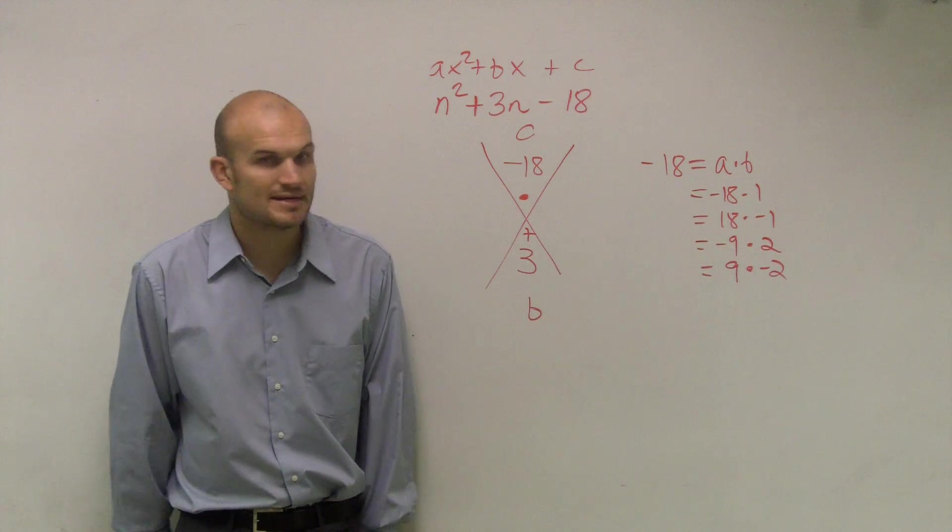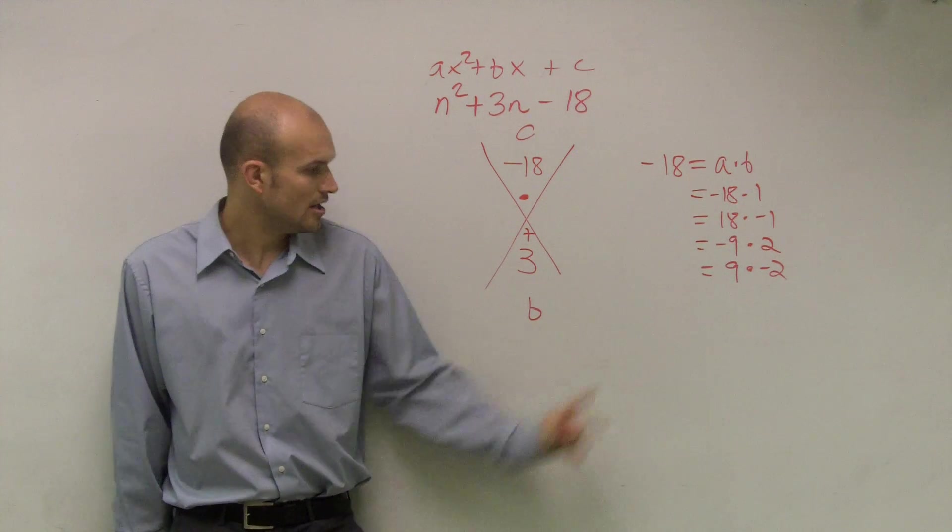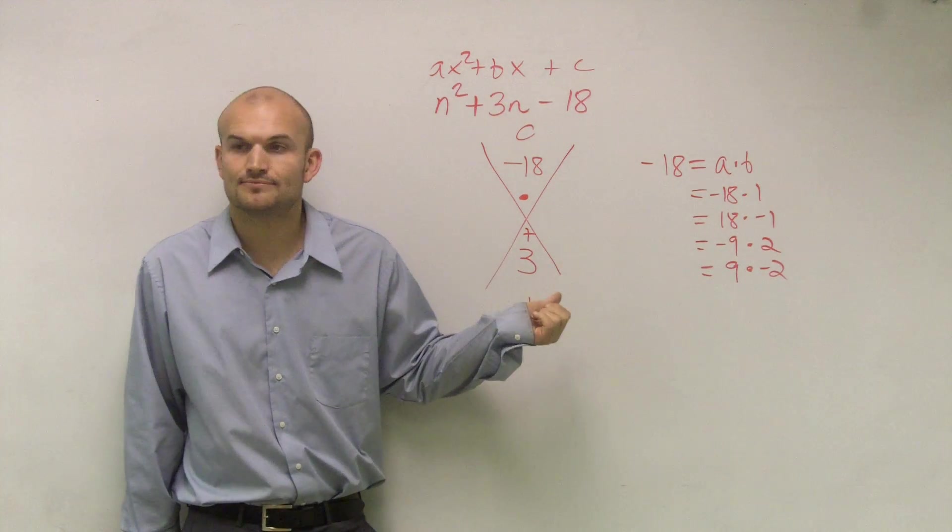But when you add them, negative 9 plus 2 gives you a negative 7, and 9 plus a negative 2 gives you a positive 7. But again, do they give us a 3? Nope.